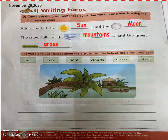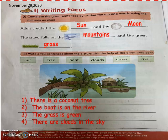I have made the following sentences. Number one: there is a coconut tree. Second: the boat is on the river. Third: the grass is green. Fourth: there are clouds in the sky.